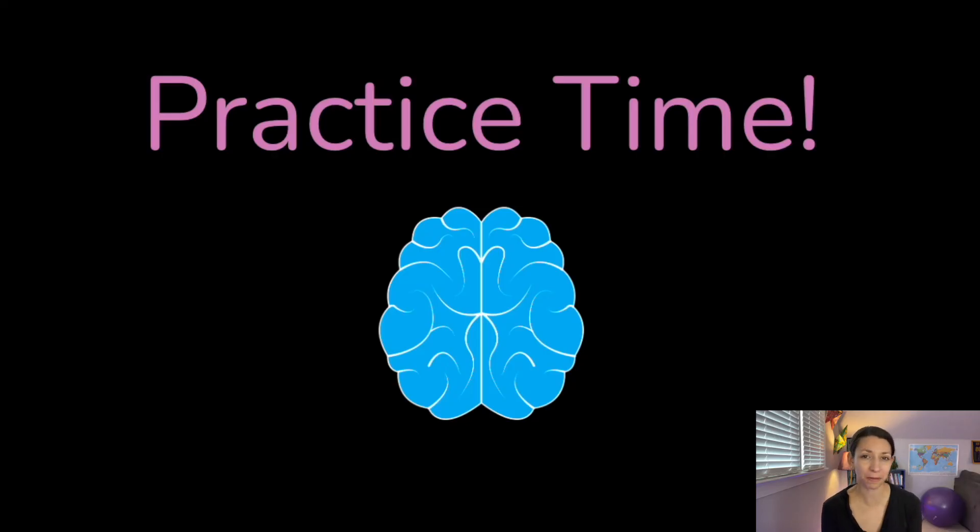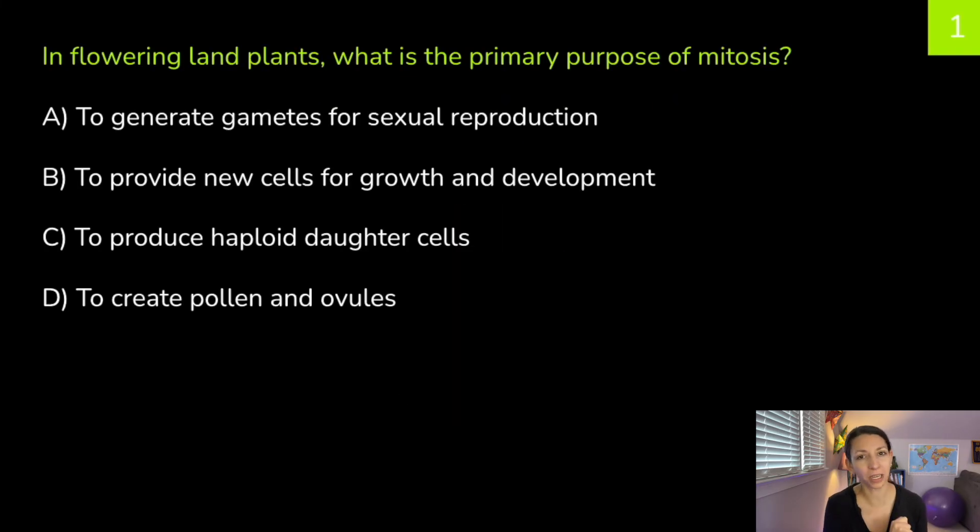Okay, it's practice time. We're not going to get too deep into the weeds with our CDKs and our checkpoints today. But it is an important topic if you're studying AP or college-level biology. Remember, you can always pause me or mute me or slow this down if you want to go at these at your own pace. In flowering land plants, what is the primary purpose of mitosis? A, to generate gametes for sexual reproduction. B, to provide new cells for growth and development. C, to produce haploid daughter cells. Or D, to create pollen and ovules. Think about it.